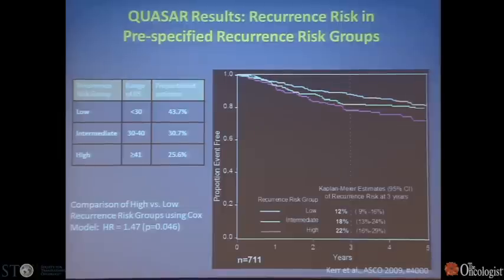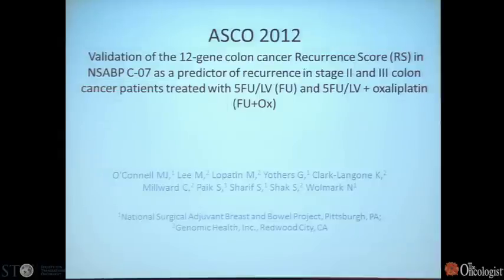Unfortunately, the test does not predict whether the patient will benefit from chemotherapy. One has to assume proportional benefit — meaning if they have a low risk, they'll have a low benefit; if they have a high risk, they have a higher benefit. But that's an assumption. I think it's useful in some patients.